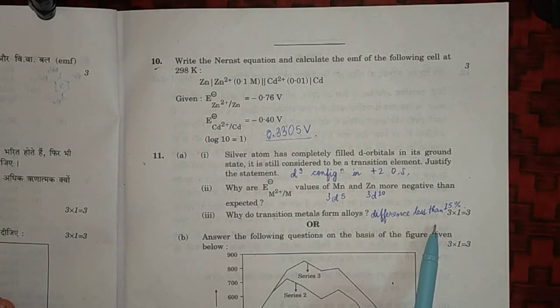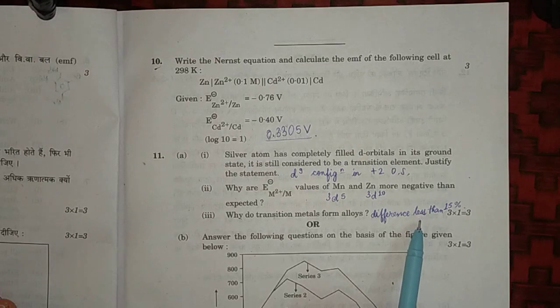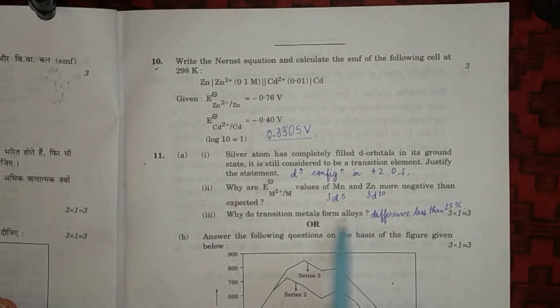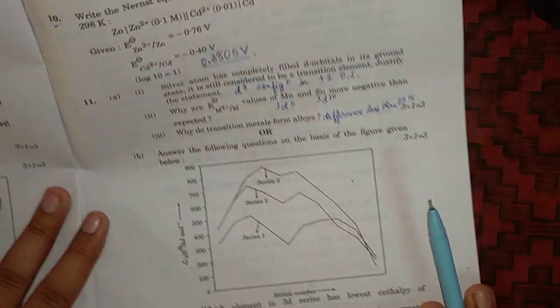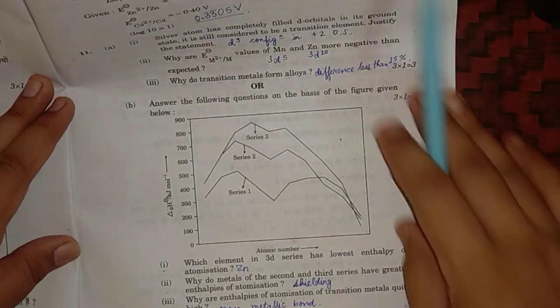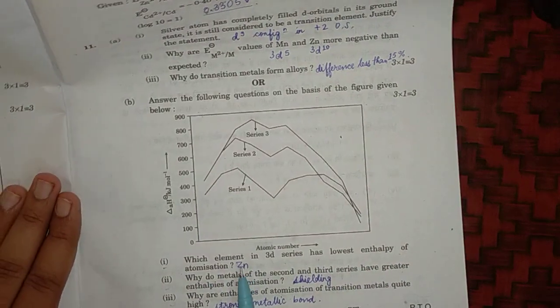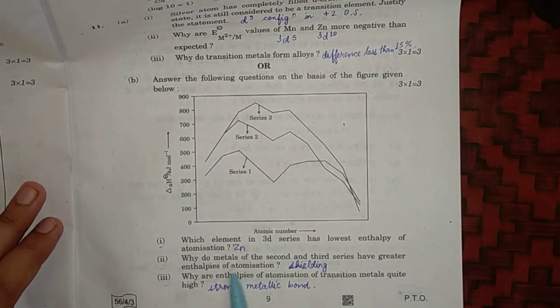Moreover, they have a lot of electrons in their valence shell, their small size and high ionization enthalpy - these all conditions make it possible for transition metal to form alloy. Next is: which element in 3d series have lowest enthalpy of atomization? Answer is zinc. Why do metals of second and third series have greater enthalpy of atomization? Because they have poor shielding and so their size decreases.